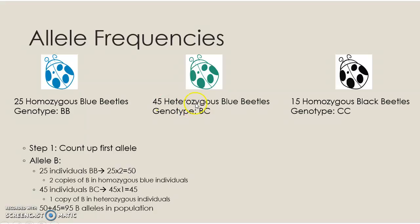We also have heterozygotes, and they also carry the B allele. There are 45 of them with genotype BC. Since their genotype is BC, they only have one B allele each, so we don't multiply by 2 — it's just 45. So 45 plus 50 is 95. There are 95 B alleles in this population. That's the count of alleles, not yet the allele frequency — frequency is the proportion.